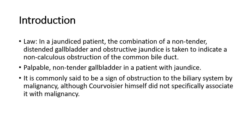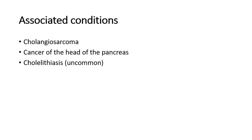Courvoisier's sign is when there is a palpable, non-tender gallbladder in a patient with jaundice. It is commonly said to be a sign of obstruction to the biliary system by malignancy, although Courvoisier himself did not specifically associate it with malignancy. The associated conditions are cholangiosarcoma, cancer of the head of the pancreas, or sometimes cholelithiasis, but that is uncommon.